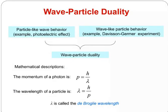Wave-particle duality: Particles show wave behavior, examples include photoelectric effect. Waves show particle behavior, examples include diffraction and general experience. The mathematical descriptions: the momentum of a photon is p equals h by lambda, and wavelength of a particle lambda equals h by p. The lambda is called the de Broglie wavelength.